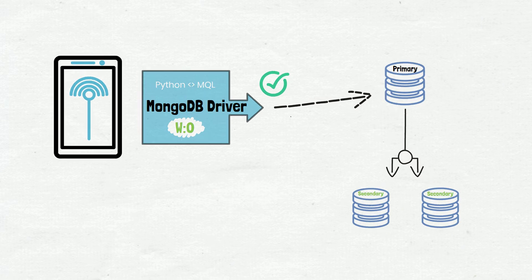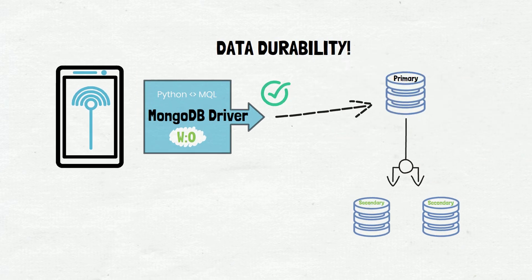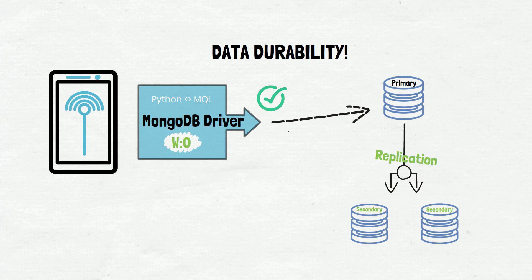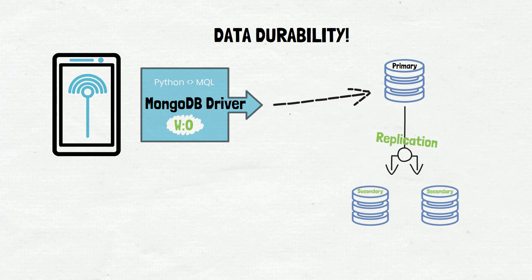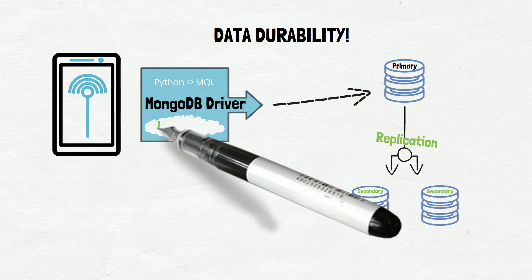The consideration here now becomes one of data durability. Replication of data to secondary nodes is a built-in function in MongoDB by default, but that replication process takes time, typically measured in milliseconds, but sometimes seconds. If we were to suddenly lose the primary before the most recent operation had time to replicate to our secondaries, then the new secondary that steps up to take the old primary's place may not have that data. This might not be a problem for some use cases, like weather sensor data, but if we're processing financial transactions, for example, we would want to be sure that we're designing for higher levels of durability.